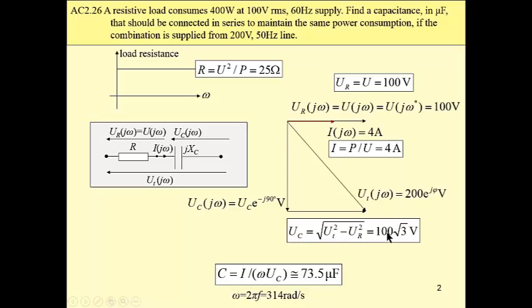The current that flows through this branch is already calculated from nominal values of resistive load. Then knowing current, knowing frequency, 50 Hz now, and knowing voltage, root mean square values, we may calculate capacitance of 73.5 µF.